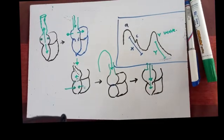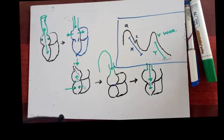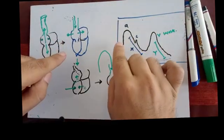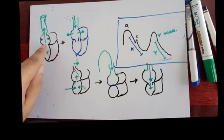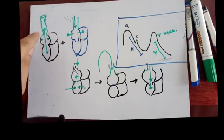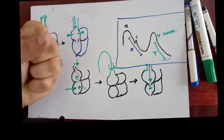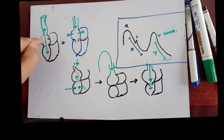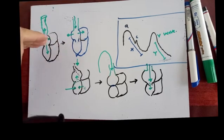Now discussing the JVP waveforms. The jugular vein opens into the right atrium. When the right atrium contracts, some blood goes down and some goes up. The blood going up produces a pulsation in the neck — a distension in the jugular system. This is the 'a wave', produced due to right atrial contraction.